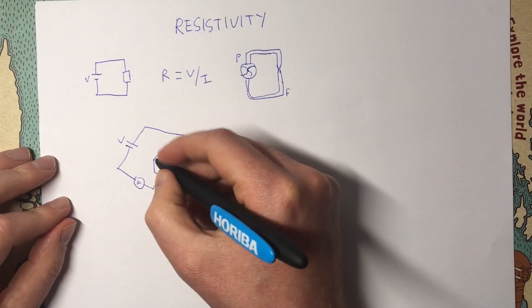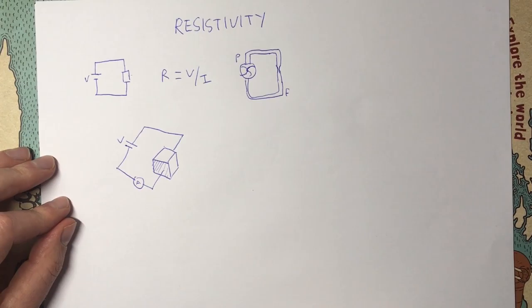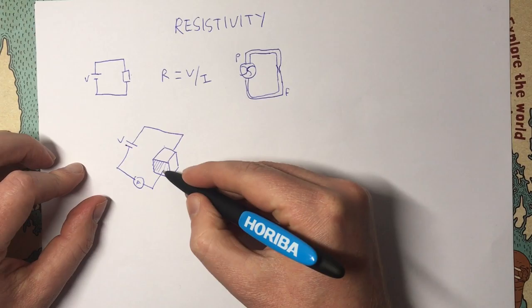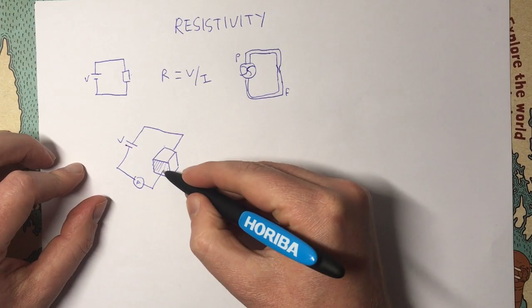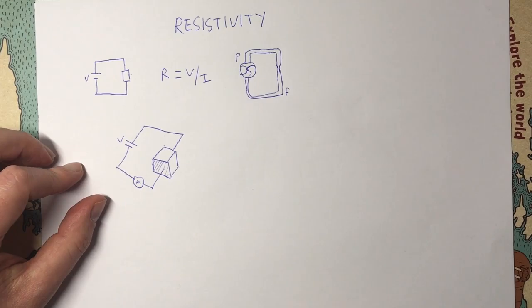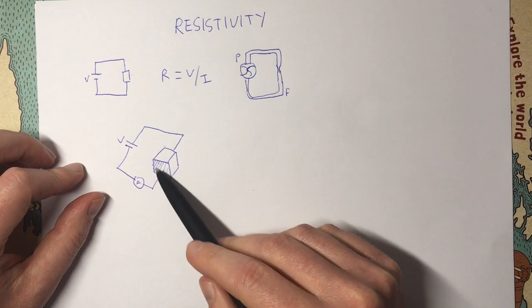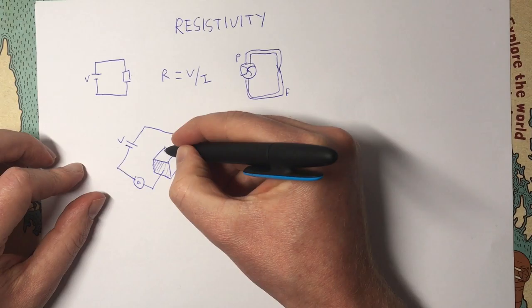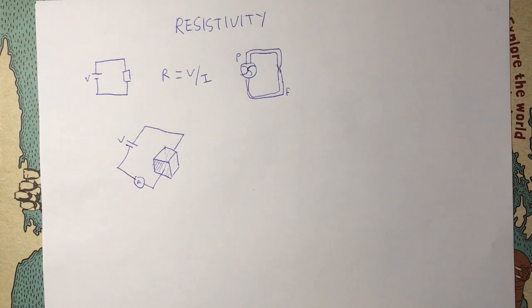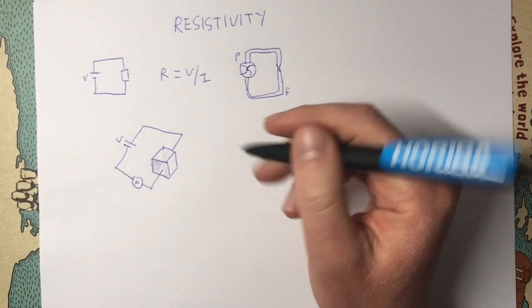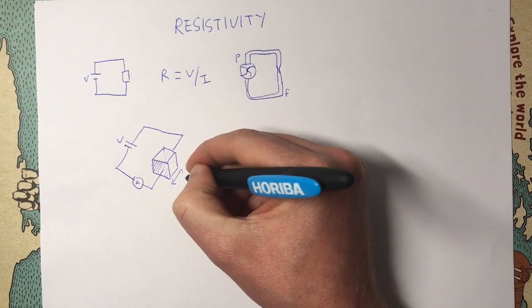One thing we're going to imagine is that the contact resistance here is negligible compared to the resistance of the cube. Otherwise we get something called spreading — if the wire makes a point contact with the cube, the current has to spread out and this spreading effect would affect the measured resistance. We imagine a flat contact whose resistance is negligible on both sides. We can choose any size for the cube, but typically we imagine a one centimetre cube.